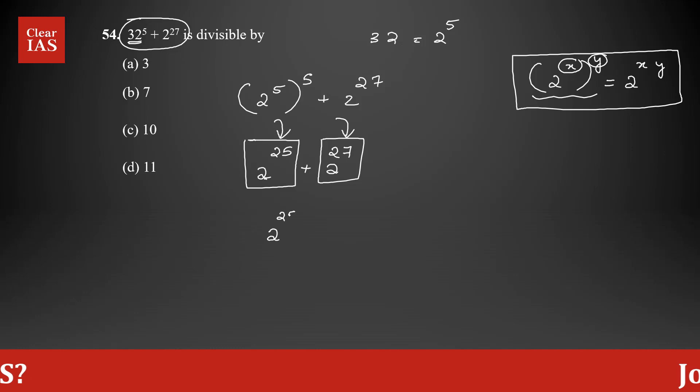I'm taking 2^25 common out. In the first term you have 1 left, and in the second term, out of 27 twos you're taking out 25 twos, so you have two twos left, which is 2^2. This gives us 2^25(1 + 2^2). If you want to cross-check, just open the bracket and verify you're getting the same result.